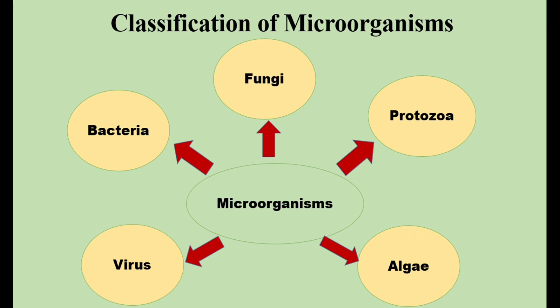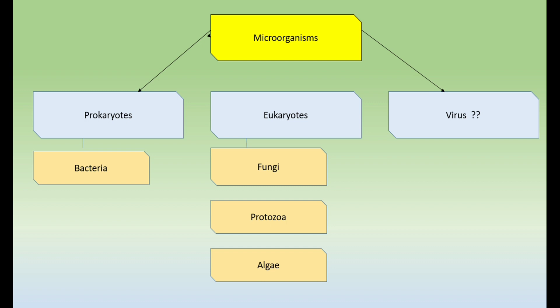Beginning with the introduction of microorganisms: microorganisms are organisms which cannot be seen with the naked eye and they require a microscope. Microorganisms can be classified into fungi, bacteria, viruses, protozoans, and different types of algae. Another classification of microorganisms is based on whether they have a true nucleus or not, dividing them into prokaryotes, eukaryotes, and viruses.